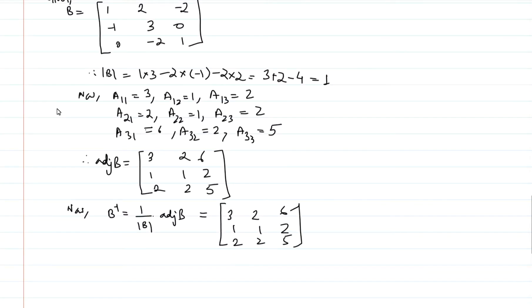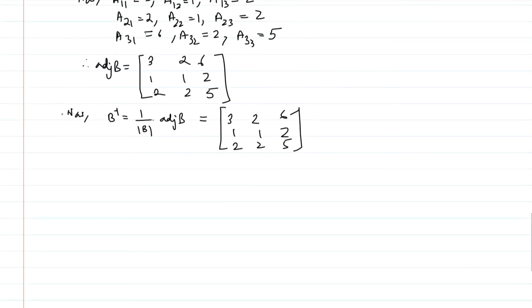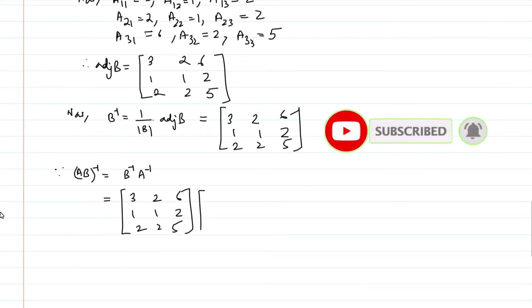Now we have B inverse. We are told to find AB inverse. Now since AB inverse is equal to B inverse times A inverse, so that is equal to B inverse we have, A inverse we know.